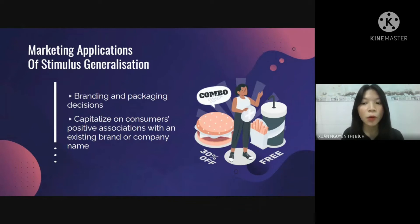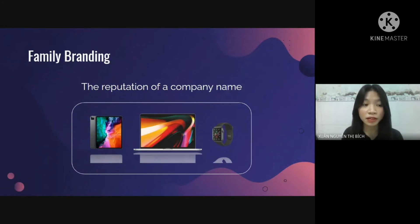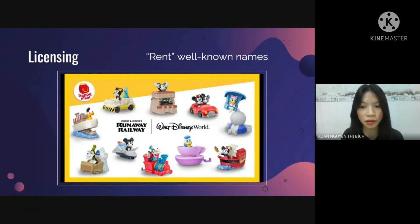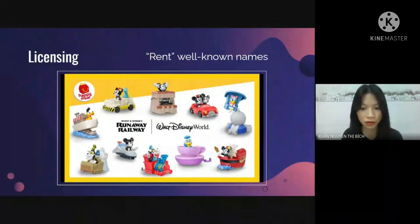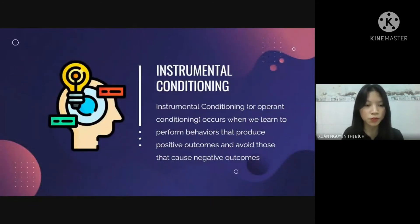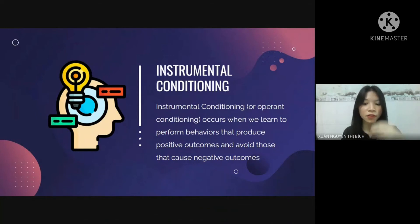Regarding marketing application of repetition: the idea is that more than three exposures to a marketing communication may be wasted. The first exposure creates awareness of the product, the second demonstrates relevance, and the third reminds consumers of the product's benefits. However, excessive repetition can be counterproductive and lead to advertising wear-out. Conditioned product associations help establish a connection between the product and a positive stimulus. Stimulus generalization is central to branding decisions — this includes company branding, where many products capitalize on a company name such as Apple, product line extension, licensing (e.g., McDonald's Happy Meals with Disney characters), and look-alike packaging.